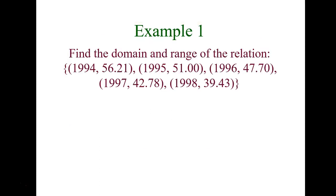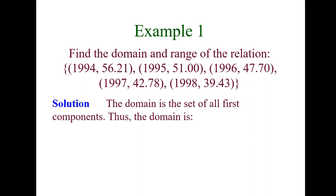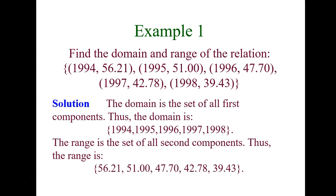Let's do a short example. We're asked to find the domain and range of a relation given as a list of ordered pairs. The first components look like years. The domain — the first components, your x values — would be the set {1994, 1995, 1996, 1997, 1998}. The range — the second components, your y values — would be the set {56.21, 51, and so forth}. Make sure you see that both are written in set notation with brackets.